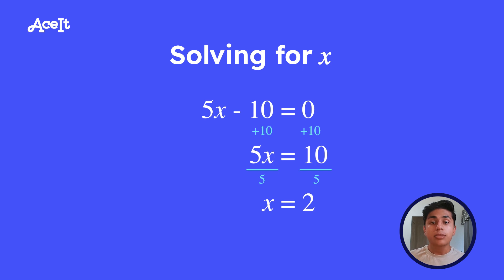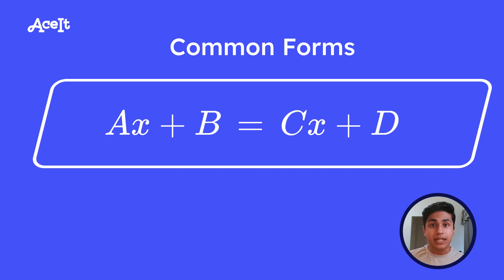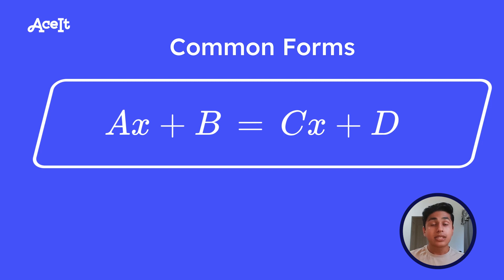The other most common form is when we have constants and coefficients on both sides of the equation. So we have a coefficient a multiplied by x plus a constant b, set equal to a coefficient c times x plus a coefficient d. Let's look at our next example: 3x plus 4 is equal to 6x minus 8.